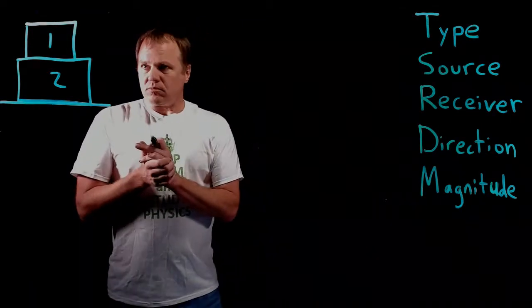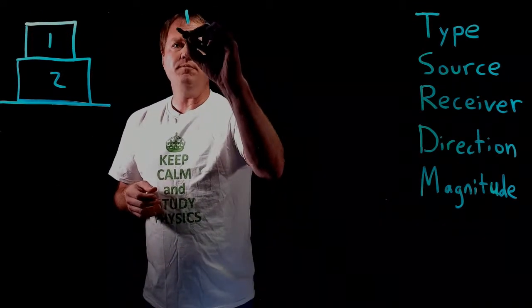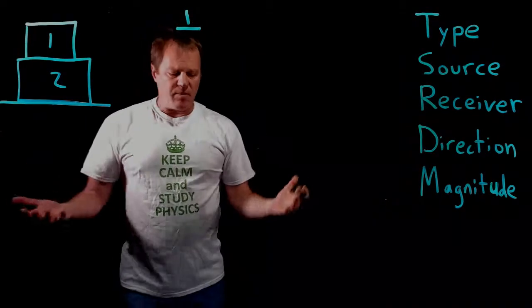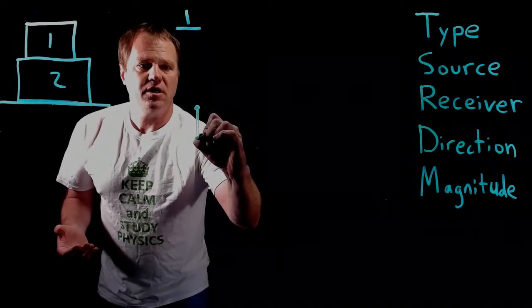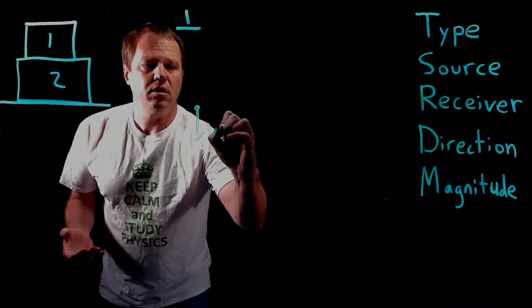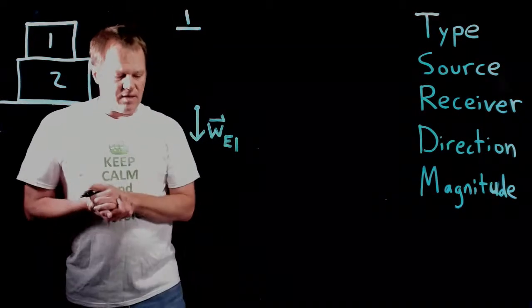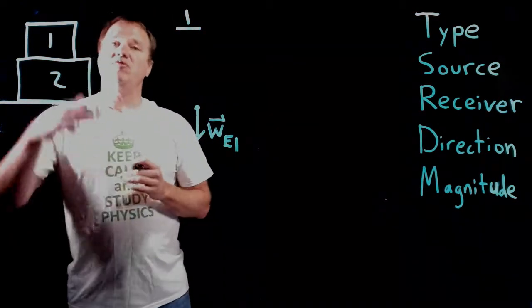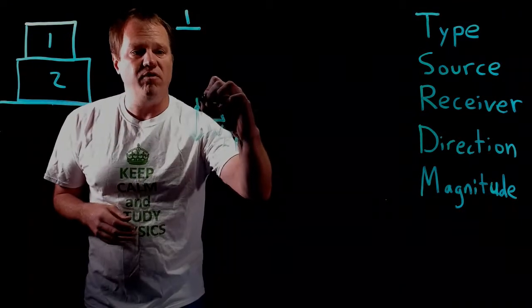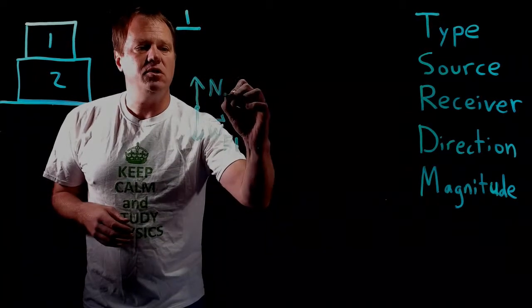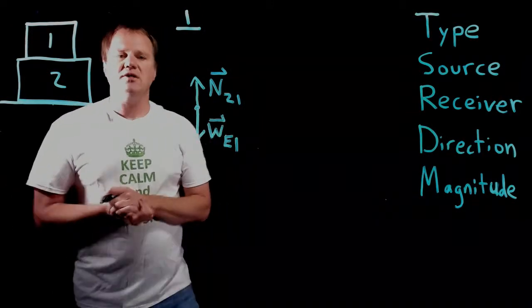I'm going to start with block one because that one's a little bit simpler. Block one, as usual, I'm going to start with a weight force, so we have the weight force exerted by the Earth on block one. Then we have something preventing block one from plummeting to the center of the Earth—that would be block two. So there's a normal force exerted by block two on block one, directed up, equal in strength. That's why it's at rest.